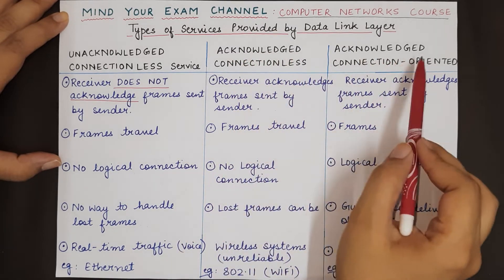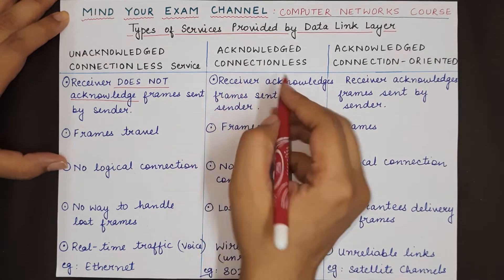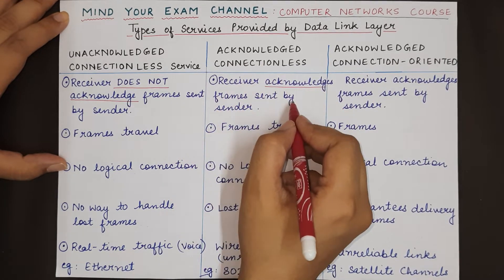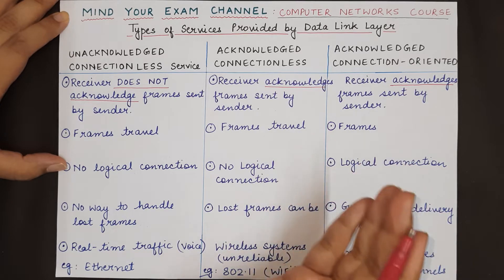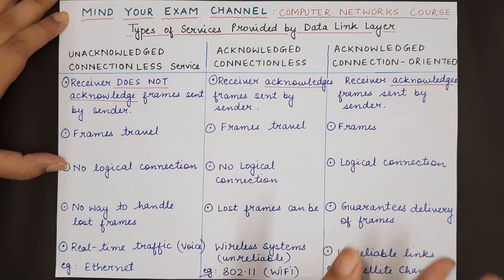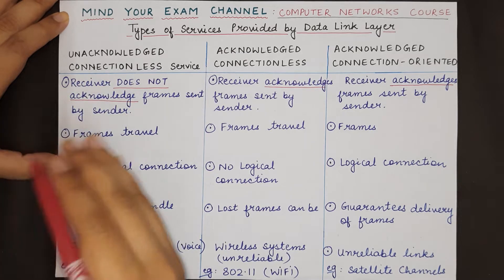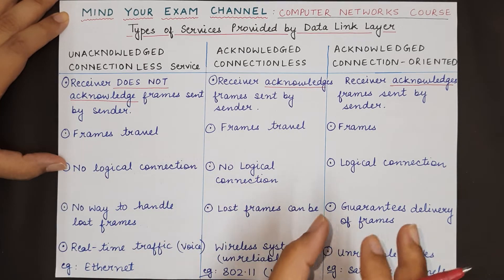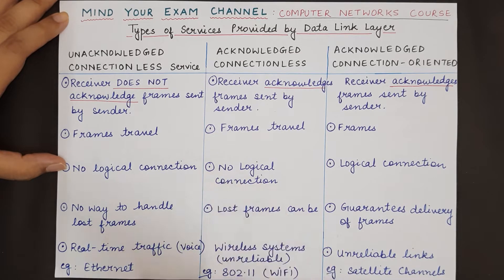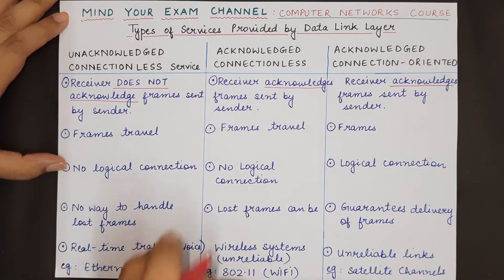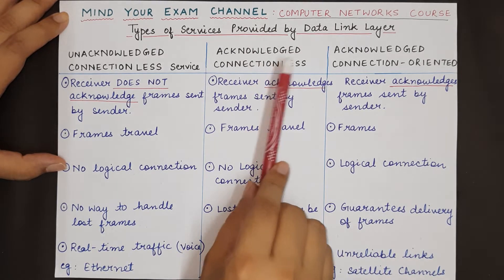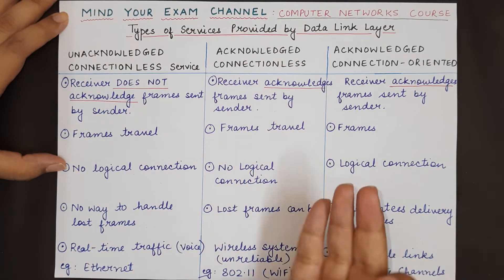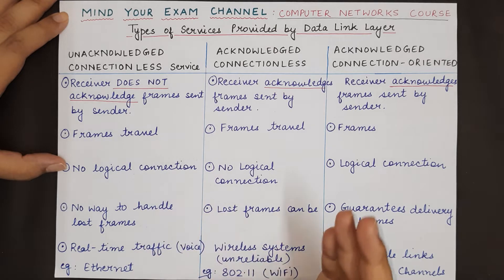In contrast, in acknowledged connectionless as well as acknowledged connection-oriented services, the receiver actually acknowledges the frames sent by the sender. This acknowledgement takes the form of an acknowledgement frame sent by the receiver to the sender, informing it about the last frame received. Accordingly, if a frame is missed due to a noisy channel, the sender retransmits that frame. So acknowledged versus unacknowledged refers to whether the receiver provides feedback.